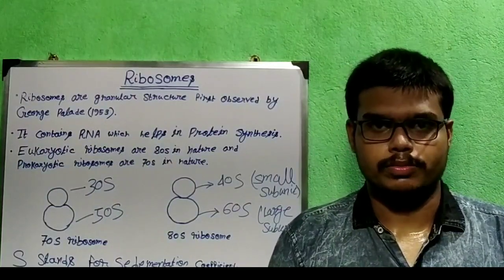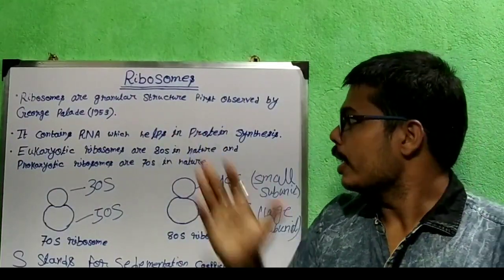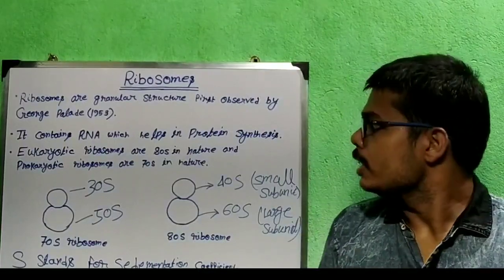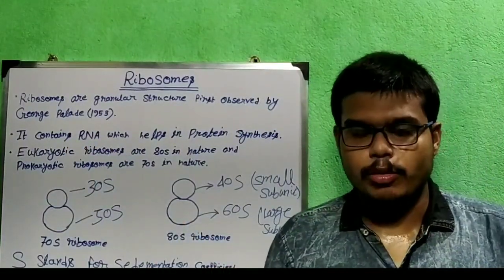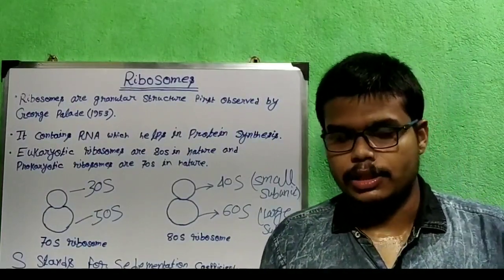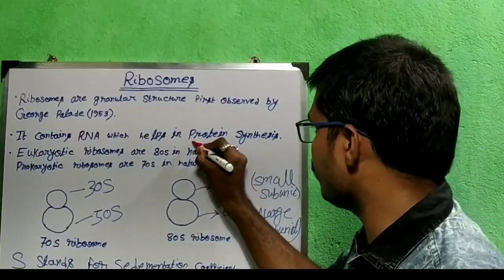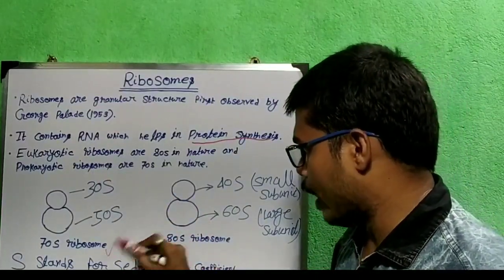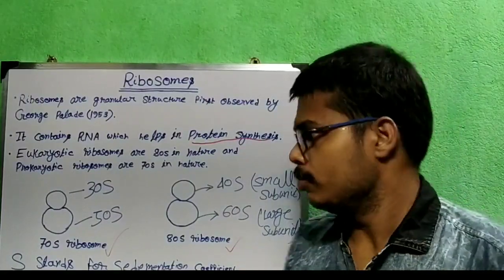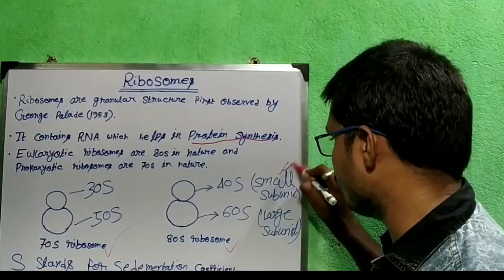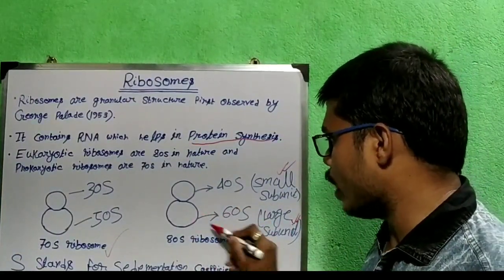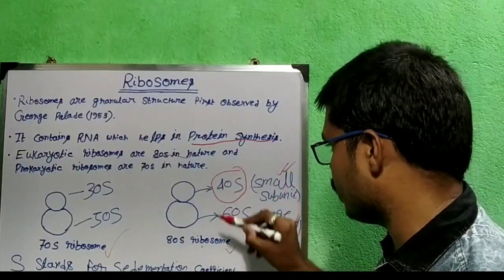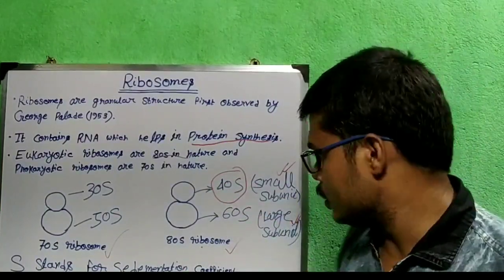Now I will discuss about the ribosome. The ribosomes are granular structures. They were first discovered by George Palade in 1953. Ribosomes contain RNA or ribonucleic acid, which helps in protein synthesis — that is the important function of ribosome. Looking at the structure, there is prokaryotic ribosome and eukaryotic ribosome. Ribosomes are made up of two subunits — one small subunit and one large subunit. In case of eukaryotic ribosome, it is 80S in nature, with a smaller subunit of 40S and a larger subunit of 60S.